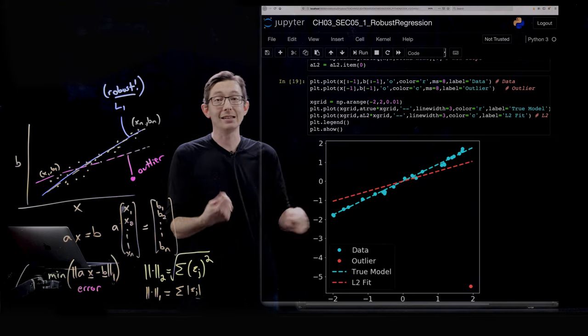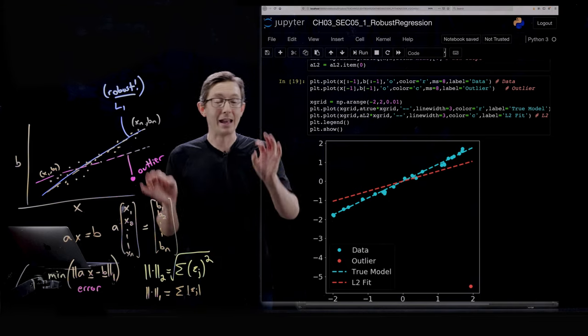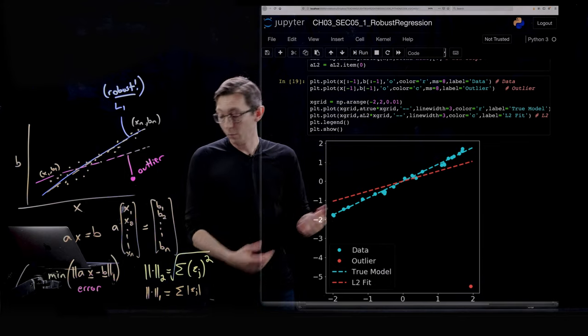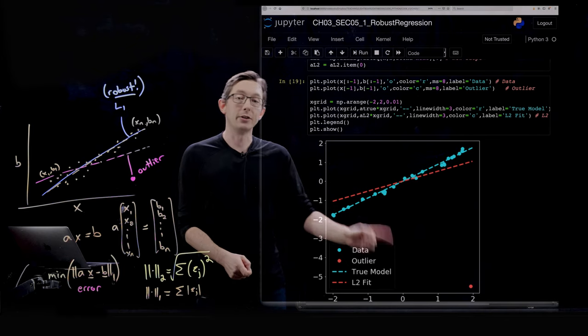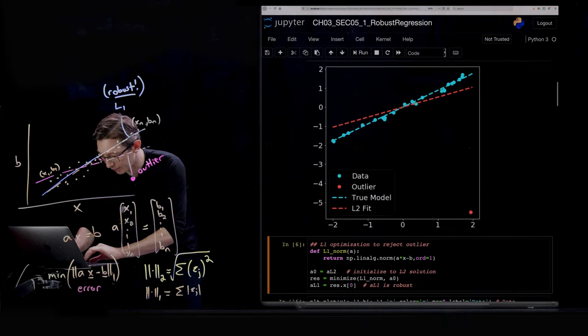And so either you'd have to painstakingly go throughout your data and try to remove all of those outliers by hand, which could be really subjective and really time consuming. Or we can introduce this one norm and try to fix it kind of automatically. So that's what we're going to do now.